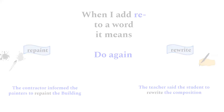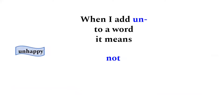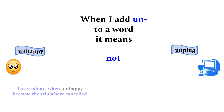When we add the prefix 'un' to a word, it means 'not' — for example, 'unhappy' means not happy, and 'unplugged.' The students were unhappy because the trip was cancelled.